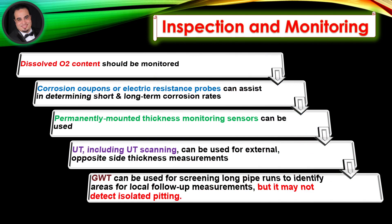Inspection and monitoring. Dissolved oxygen content should be monitored. Corrosion coupons or electric resistance probes can assist in determining short- and long-term corrosion rates. Permanently mounted thickness monitoring sensors can be used. UT, including UT scanning, can be used for external opposite-side thickness measurements. Guided wave testing can be used for screening long pipe runs to identify areas for local follow-up measurements, but it may not detect isolated pitting.